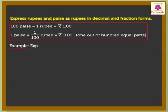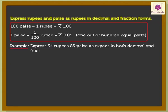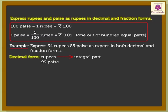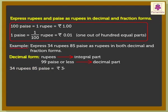Now let's solve an example: express 34 rupees 85 paise as rupees in both decimal and fraction forms. In decimal form, rupees form the integral part and paise of 99 or less form the decimal part. Thus, 34 is the integral part and 85 is the decimal part. Therefore, 34 rupees 85 paise is expressed as 34.85 rupees as a decimal.